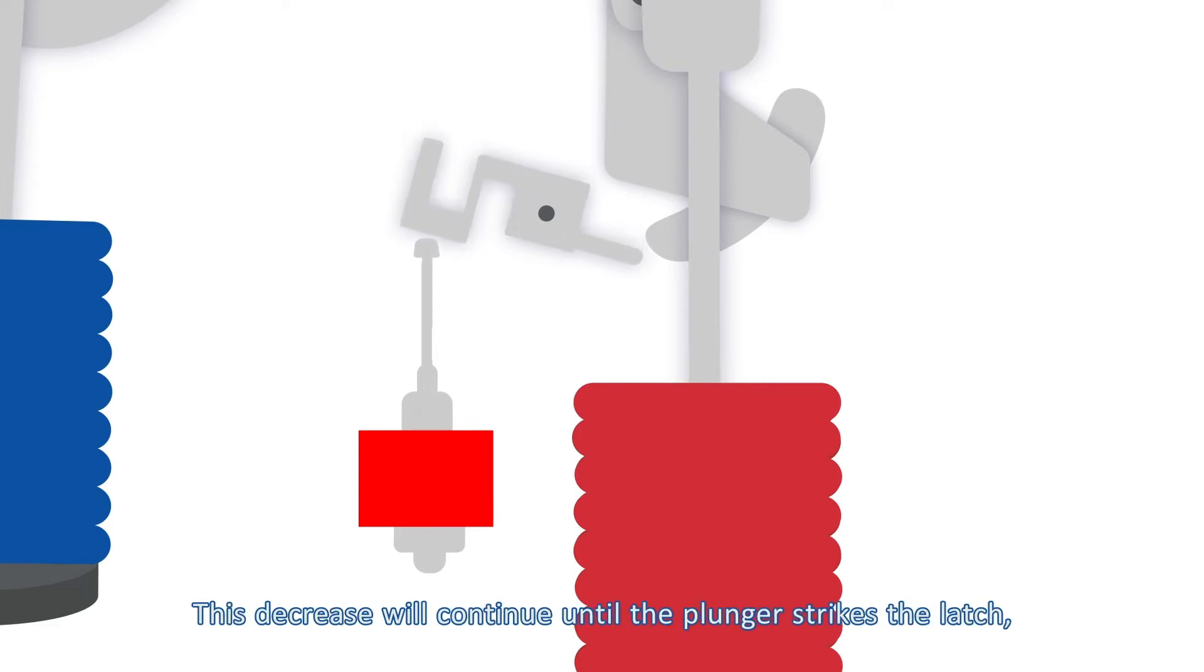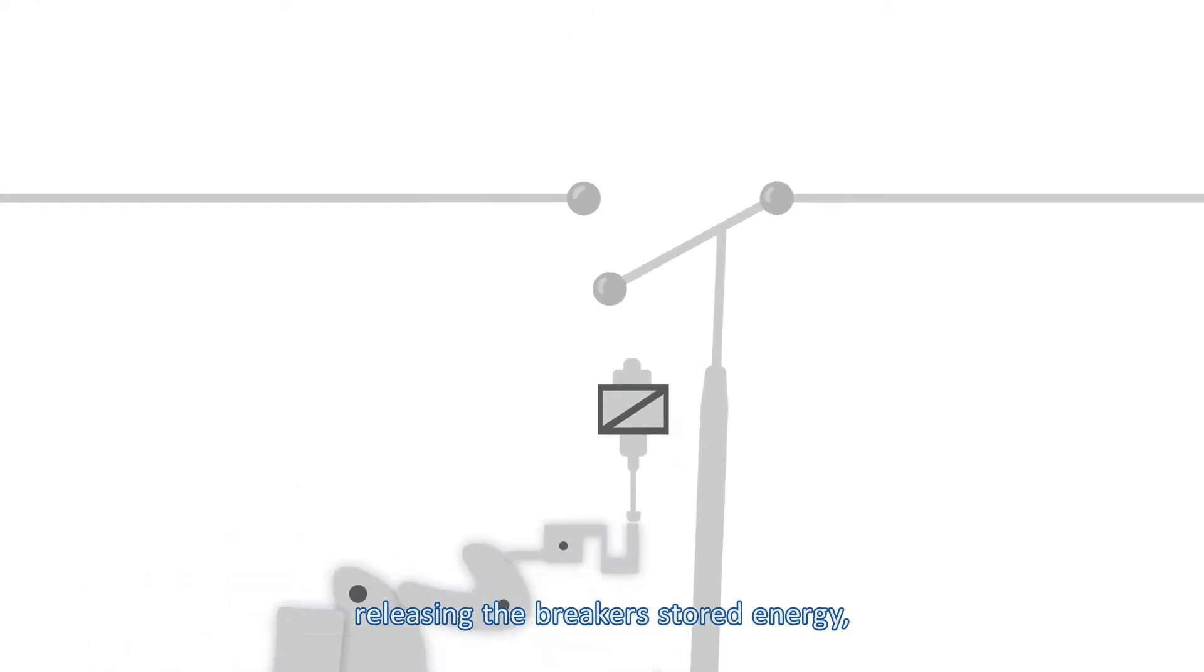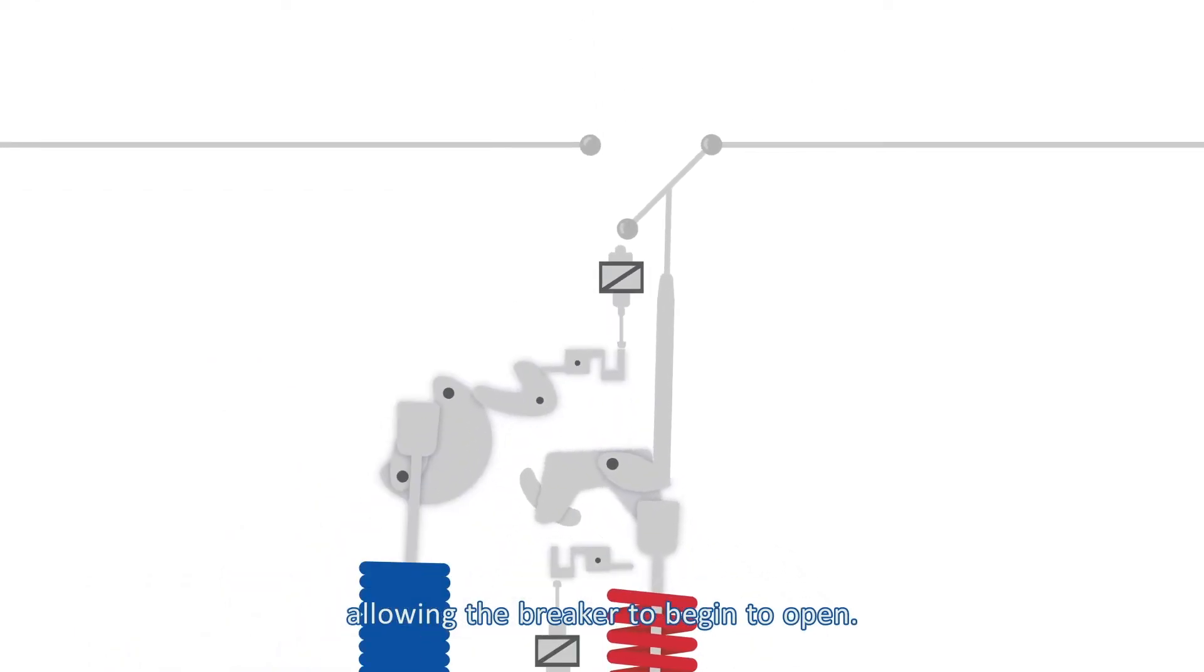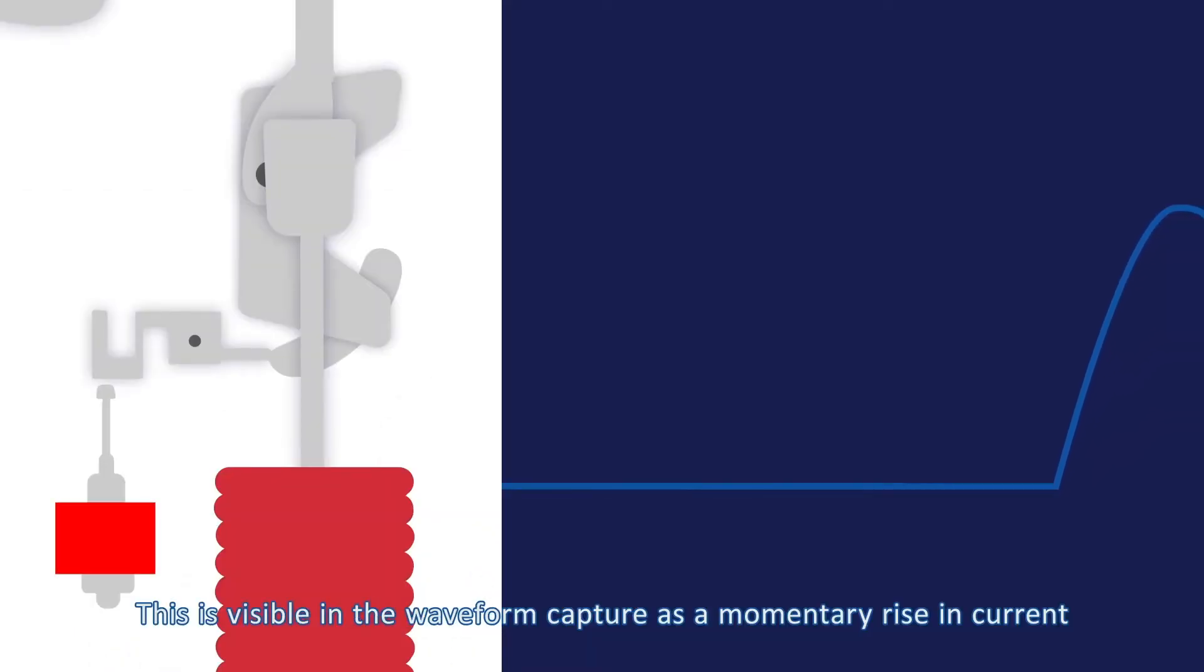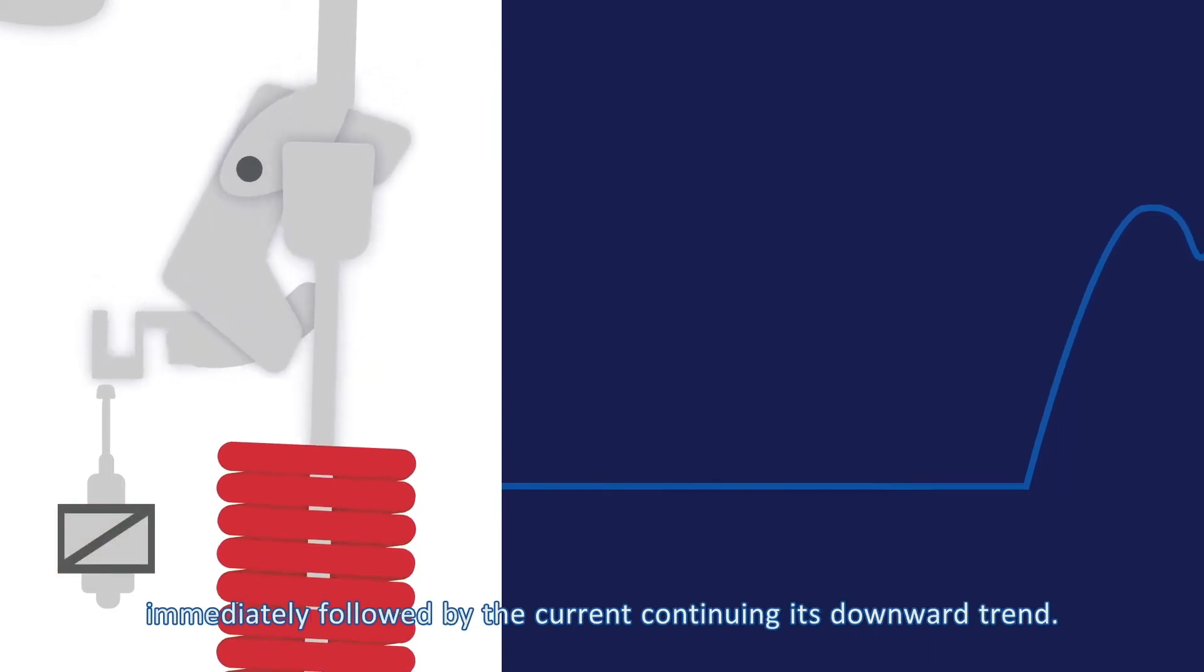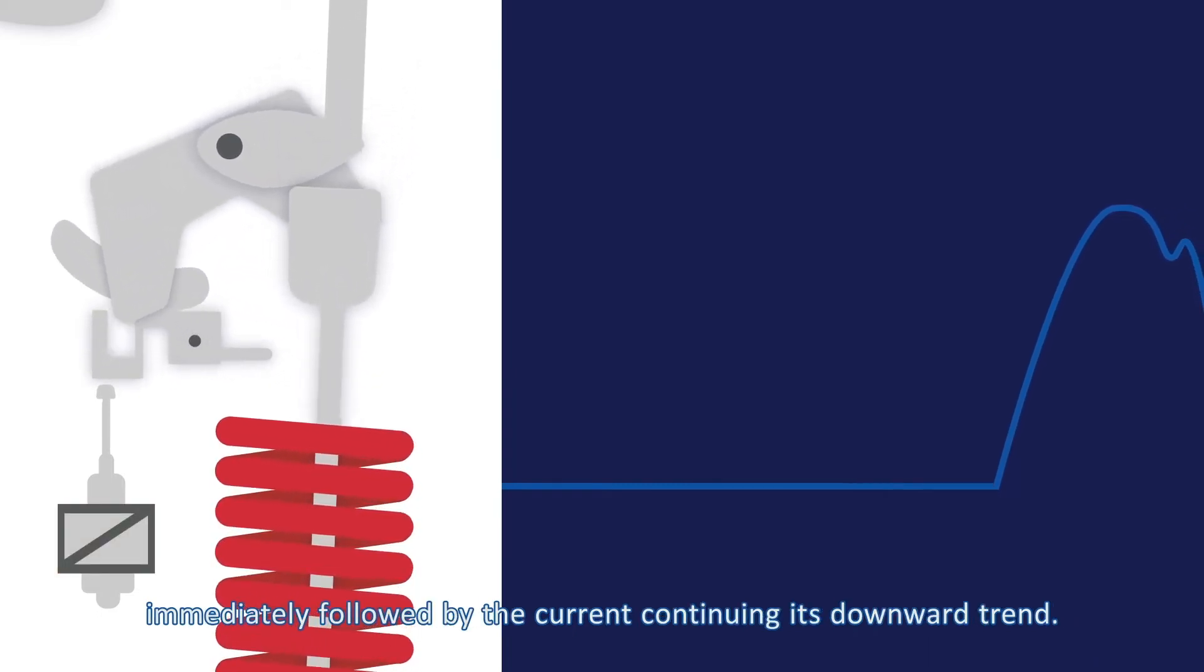This decrease will continue until the plunger strikes the latch, releasing the breaker's stored energy, allowing the breaker to begin to open. This is visible in the waveform capture as a momentary rise in current immediately followed by the current continuing its downward trend.